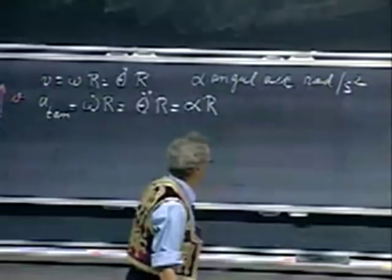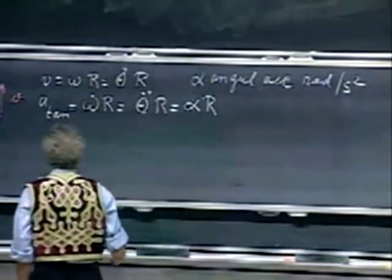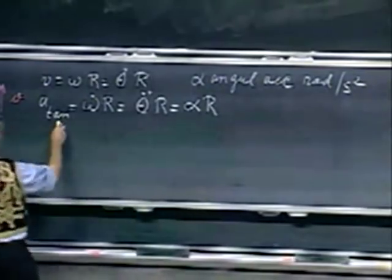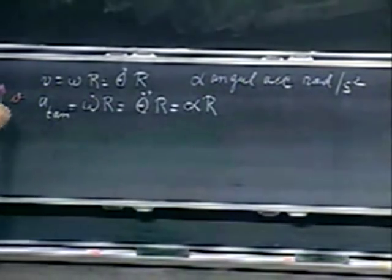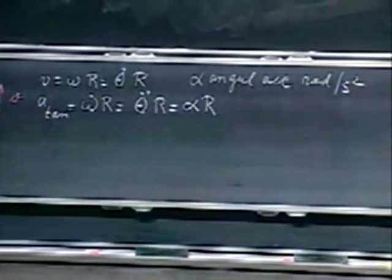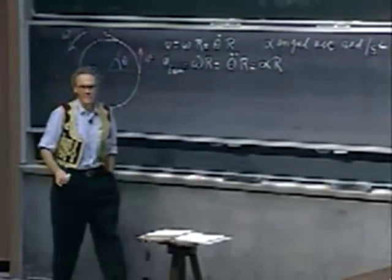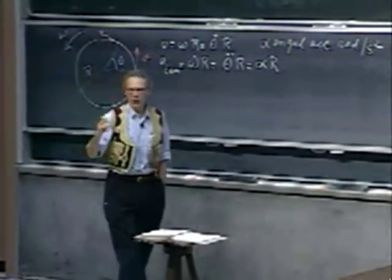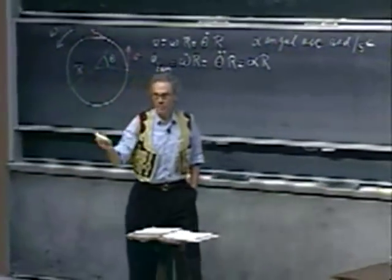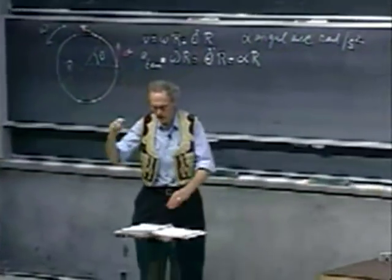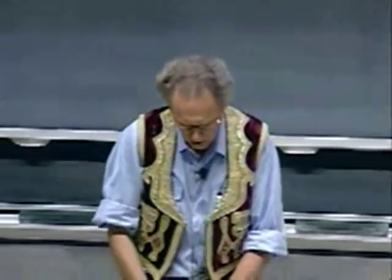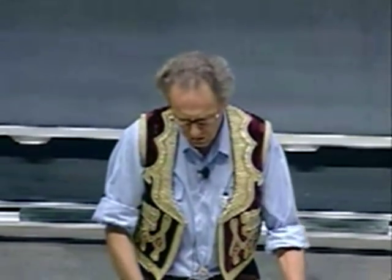Do not ever confuse a tangential acceleration, which is along the circumference, with a centripetal acceleration. The two are both there, of course. The tangential acceleration is the one that makes the speed change along the circumference.